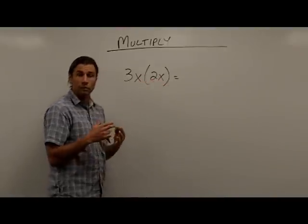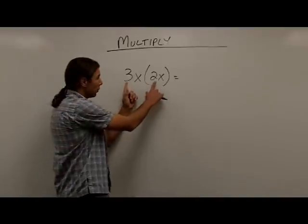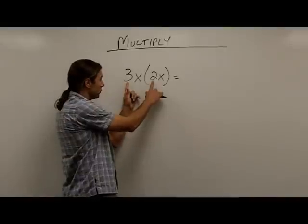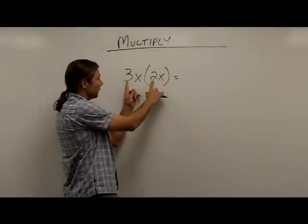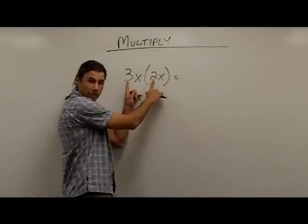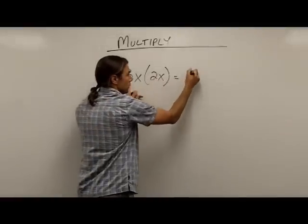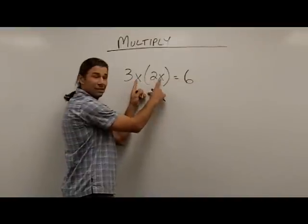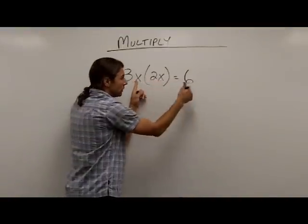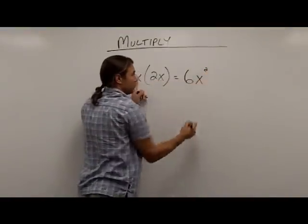So the way that I would start is I would start by multiplying the coefficients, or the numbers, in these two terms. So I would take 3 times 2, which is going to give me 6, and then I would take x times x, which is going to give me x to the second power.